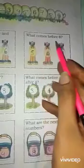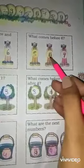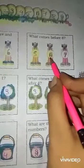Let's move to the next question. What comes before 6? 6. Here is the 6. What is the before number of 6? Yes, it is 5.